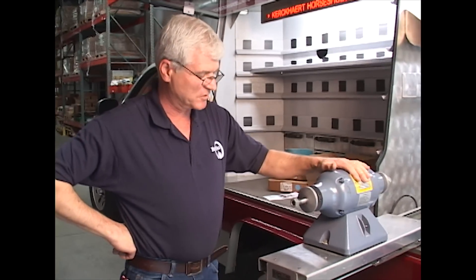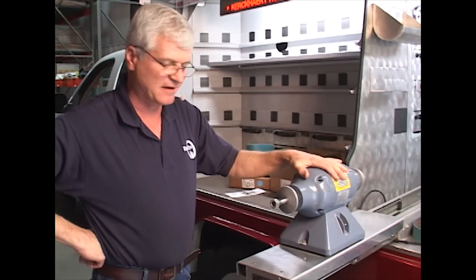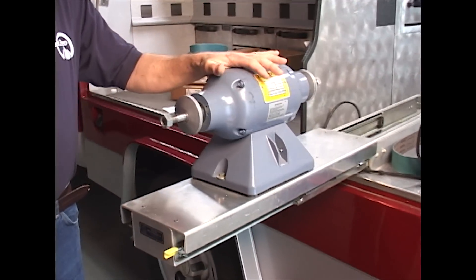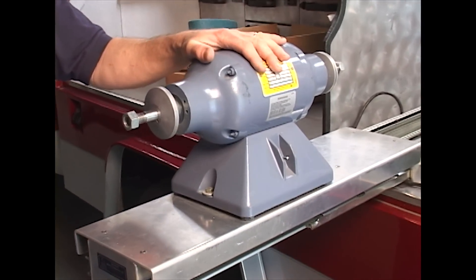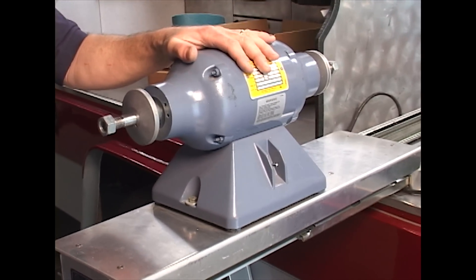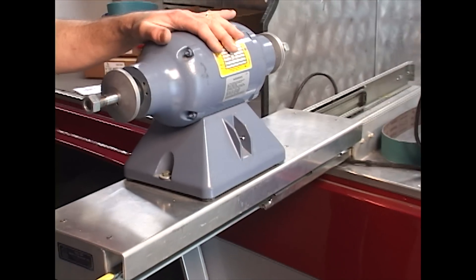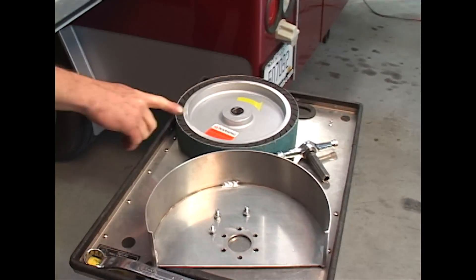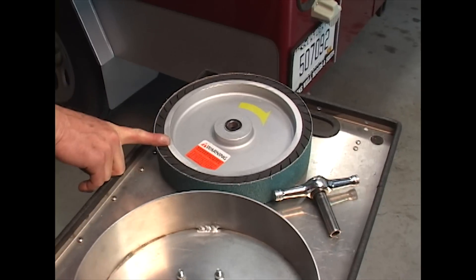All right, what we're showing here is the Baldor Grinder Half Horse that Ferrier Products distribute, and we're going to show you how to assemble a 10-inch expander wheel to the grinder. Here is the expander wheel, the 10-inch expander wheel as it comes out of the box.